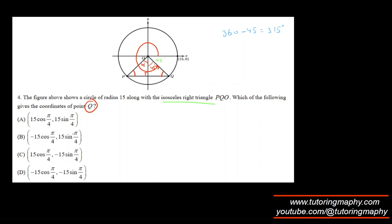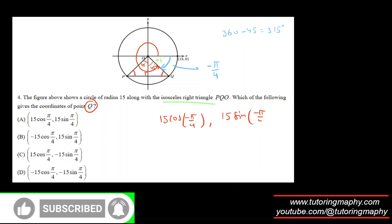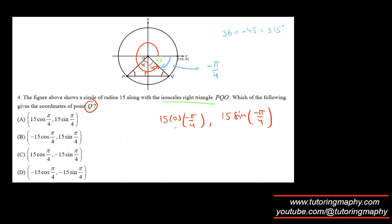None of the answer choices show 315, but they use negative angles — meaning clockwise sense. In the clockwise direction, this angle is negative π/4. So the coordinates are (r·cos(−π/4), r·sin(−π/4)). Since cosine is an even function, cos(−π/4) = cos(π/4). Since sine is an odd function, it becomes −15·sin(π/4). That's option C.